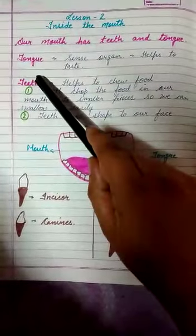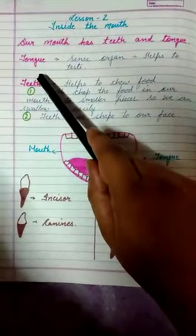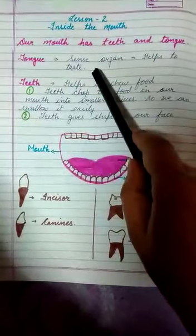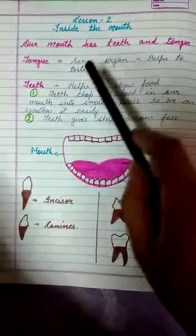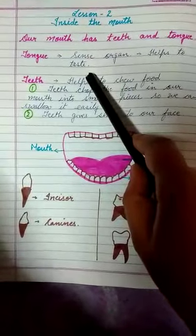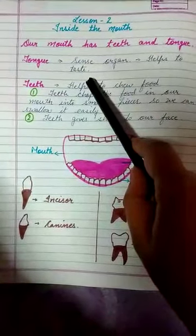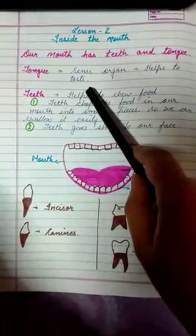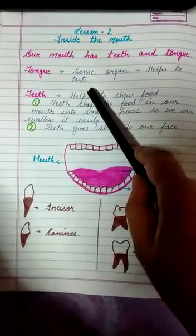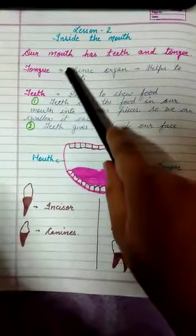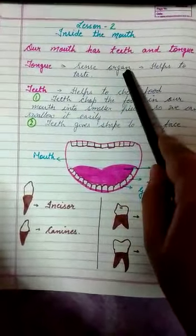Tongue ke baare mein hum pehle hi parh chuke hai that it is one of the sense organs that helps in taste. Humarey tongue ke oopar taste buds hoti hai aur woh humeh taste karne mein help kertey hai. Yeh humara ek sense organ hai.